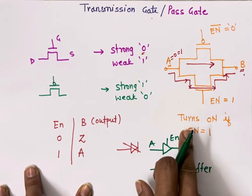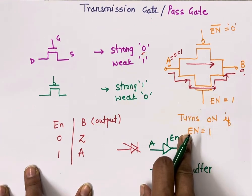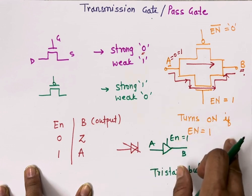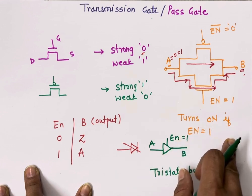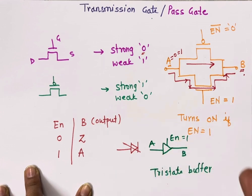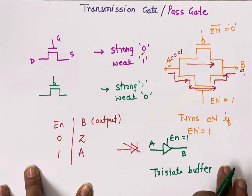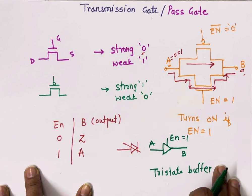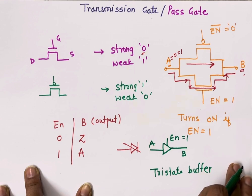This is how our transmission gate works. Its uses are: it gives a strong value of zero and a strong value of one. Another use is that when we implement a circuit using transmission gate, fewer transistors are required for implementation of that circuit.